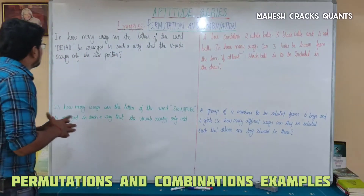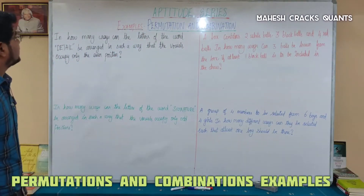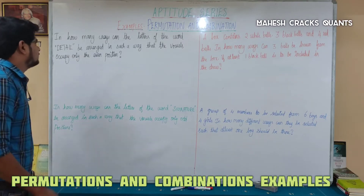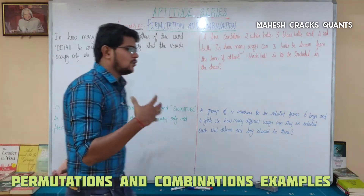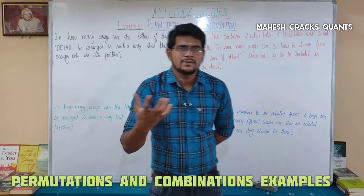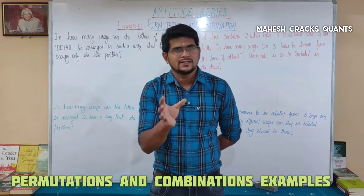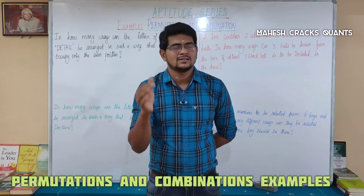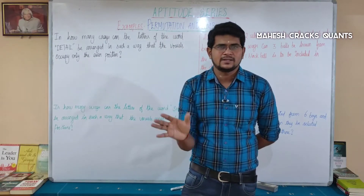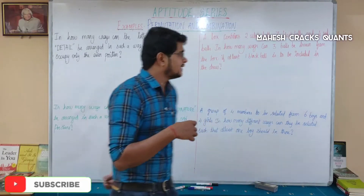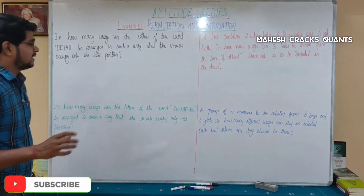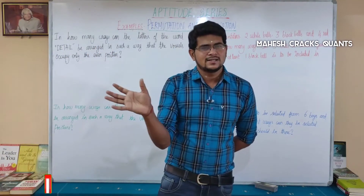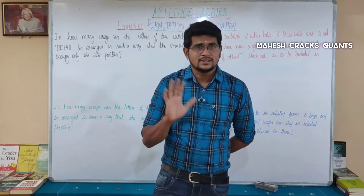The first question is: in how many ways can the letters of the word DETAIL be arranged such that the vowels occupy only the even positions? There are six letters total. If letters are not repeated, we can arrange them in six factorial ways.